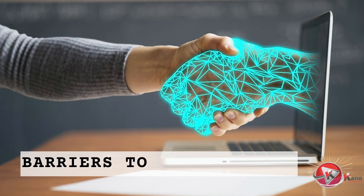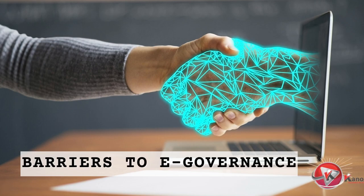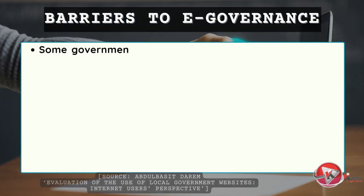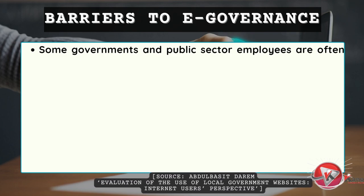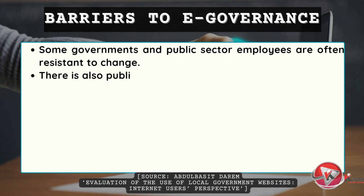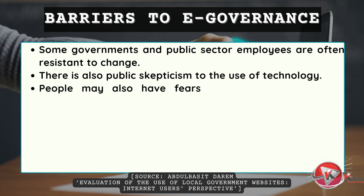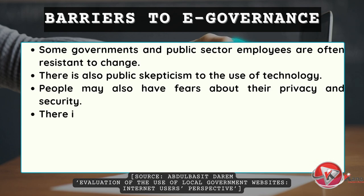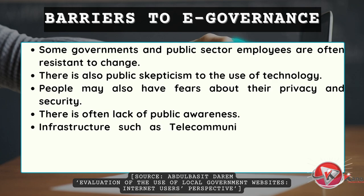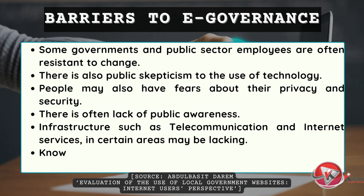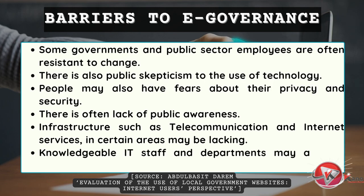There are however barriers, or stumbling blocks, to implementing e-governance. Some governments and public sector employees are often resistant to change. There is also public skepticism to the use of technology. People may also have fears about their privacy and security. There is often a lack of public awareness. Infrastructure such as telecommunication and internet services in certain areas may be lacking. Knowledgeable IT staff and departments may also be lacking.